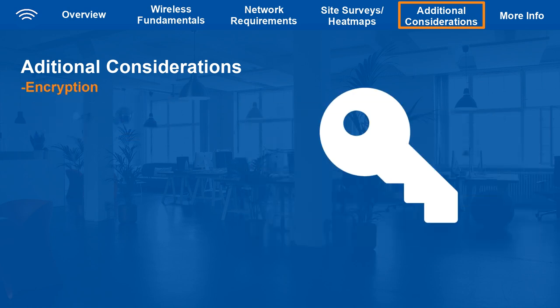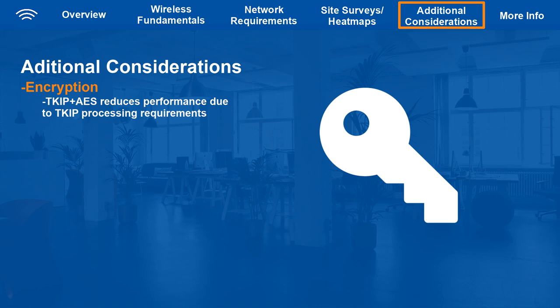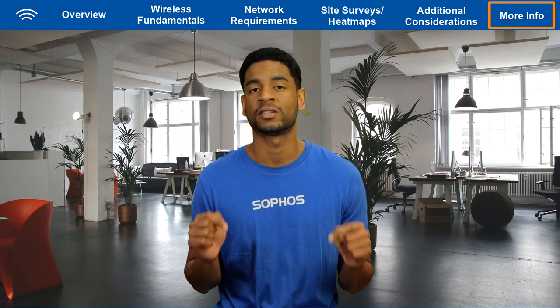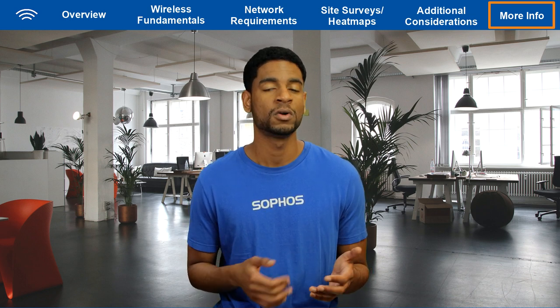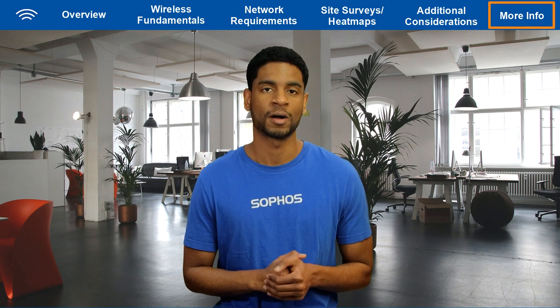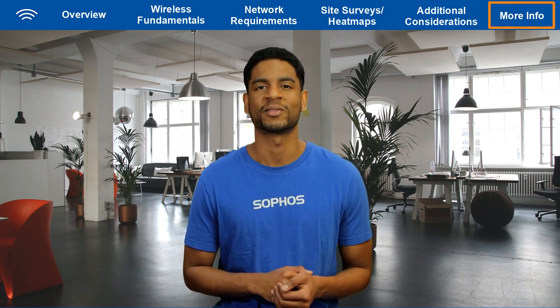If you choose to use the most compatible encryption — TKIP plus AES — remember that throughput and performance are greatly reduced due to TKIP's processing requirements. We suggest using AES only, and using a separate AP for older clients that will only work with TKIP. Thanks for watching everyone. If you have further questions, feel free to check out the documentation links in the video description or view and post questions at community.sophos.com. Stay safe out there.